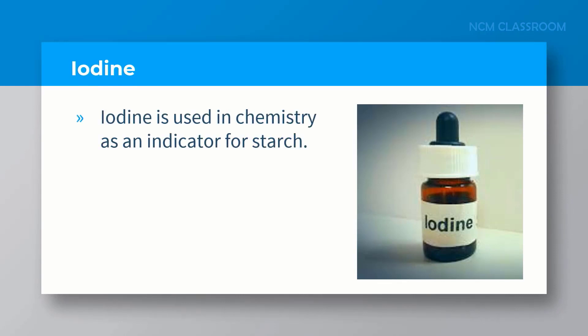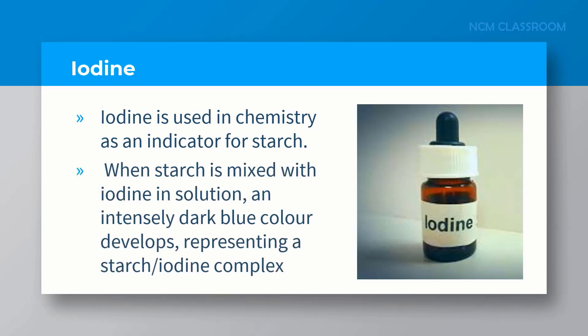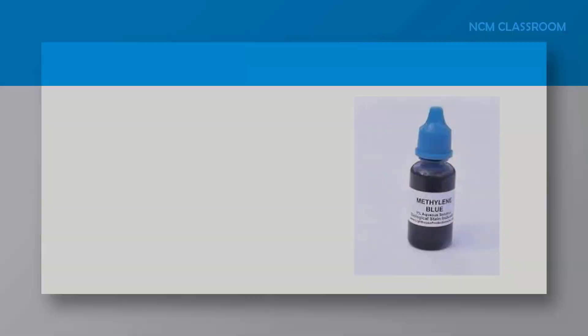Iodine is used in chemistry as an indicator for starch. When starch is mixed with iodine solution, an intensely black dark blue color develops, representing a starch-iodine complex.